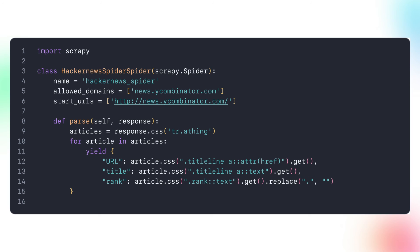Here's an example of how to use a Scrapy spider to scrape data from a website. The code example uses Scrapy to scrape data from the Hacker News website. After importing the necessary modules, we define the spider class we want to use. Next, we set the spider properties: name, allowed domains, and start URLs. Then we define the parse method, which is the entry point for the spider and is called with the response of the URLs specified in start URLs. In the parse method, we extract data from the HTML response. The response object represents the HTML page received from the website. The spider uses CSS selectors to extract relevant data from the HTML structure, and we use a for loop to iterate over each article found on the page. Finally, for each article, the spider extracts the URL, title, and rank information using CSS selectors and yields a Python dictionary containing this data.